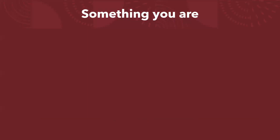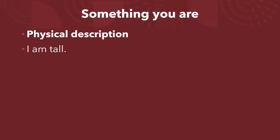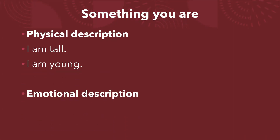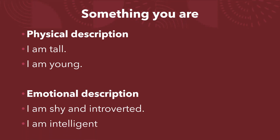Something you are — physical description: I am tall, I am young. Emotional description: I am shy and introverted, I am intelligent. Pay attention: when we are talking about something you are, we are using the verb to be.